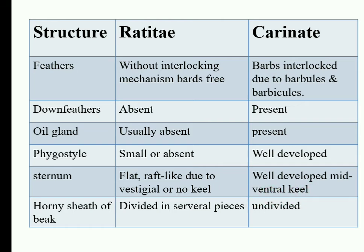The next character is the horn sheet of beak. In Ratites birds, the beak is divided into multiple cervical pieces or parts.